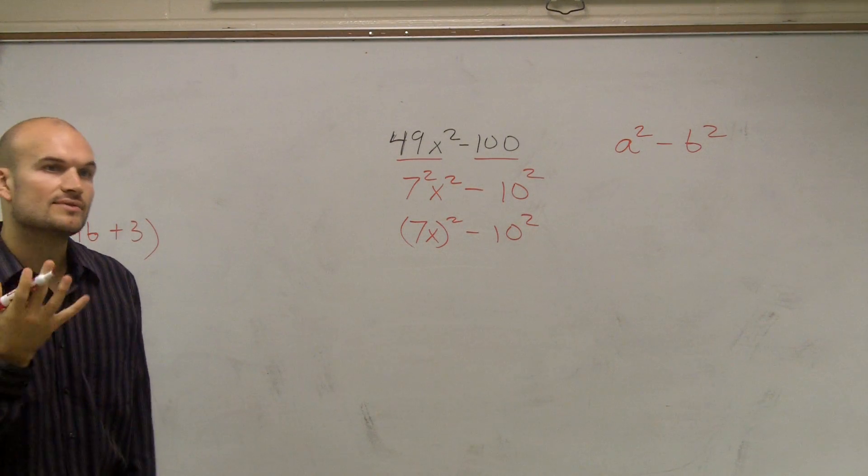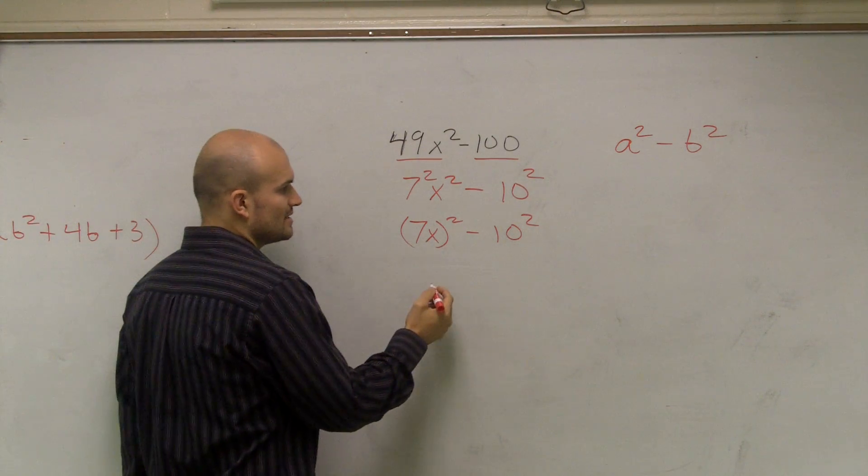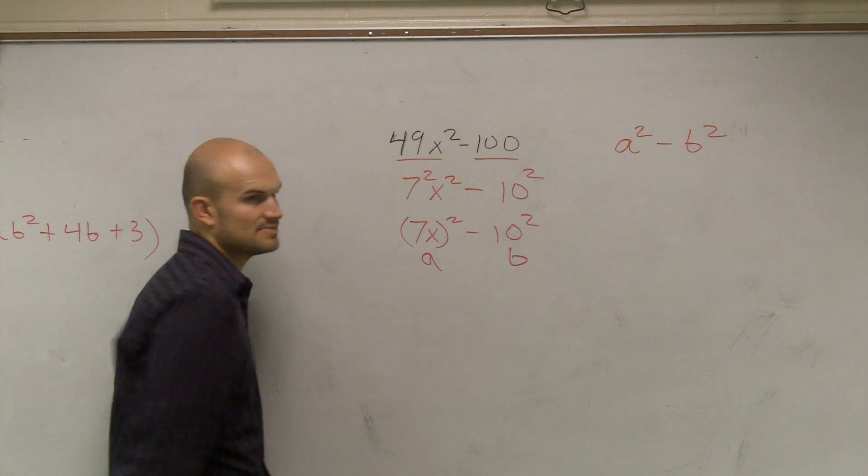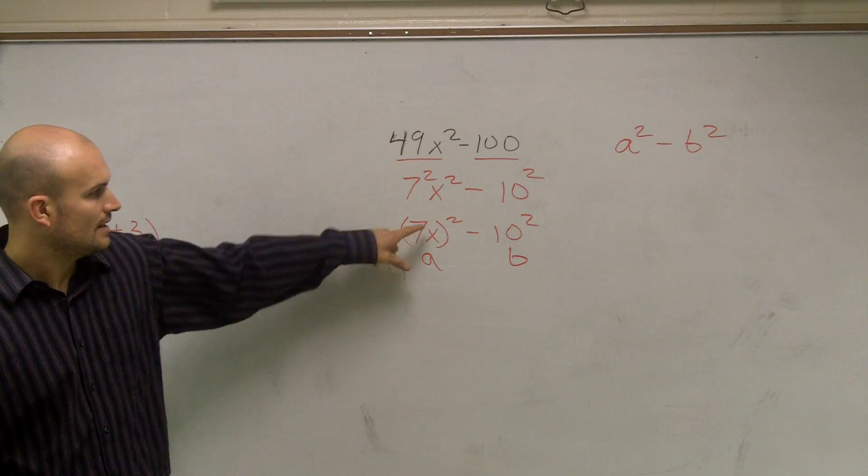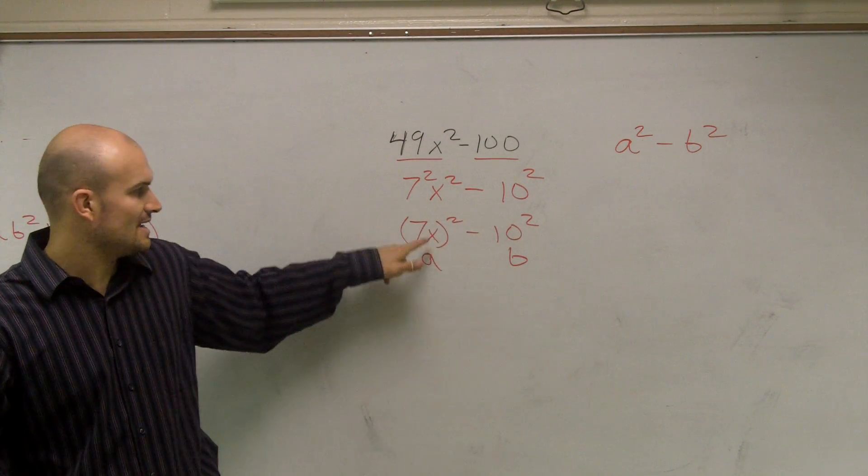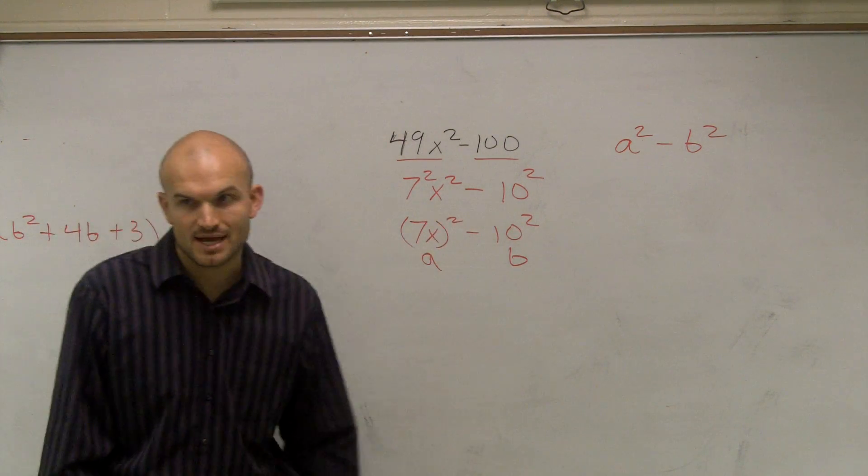So now, ladies and gentlemen, what we can do is say that's A and that's B. A squared minus B squared. A is 7X and B is negative 10.